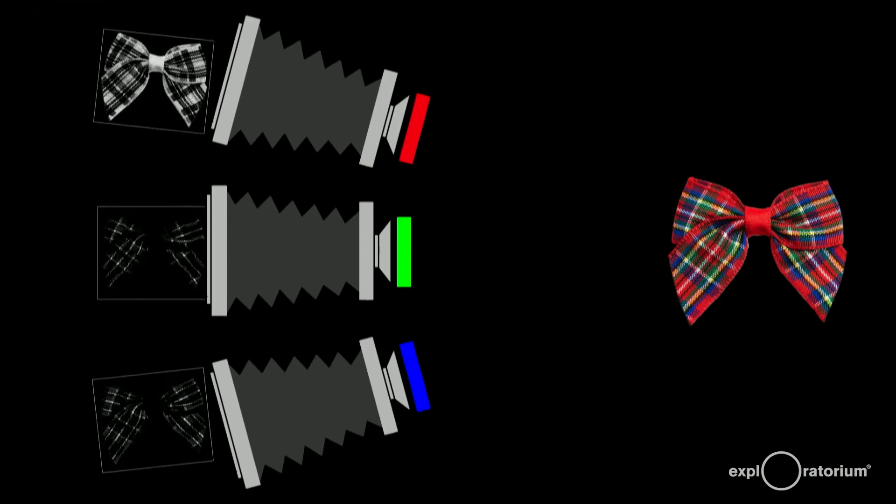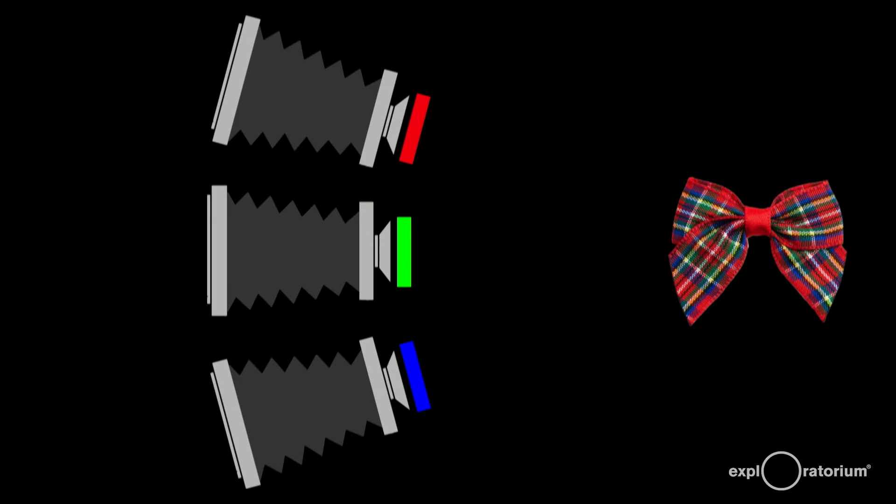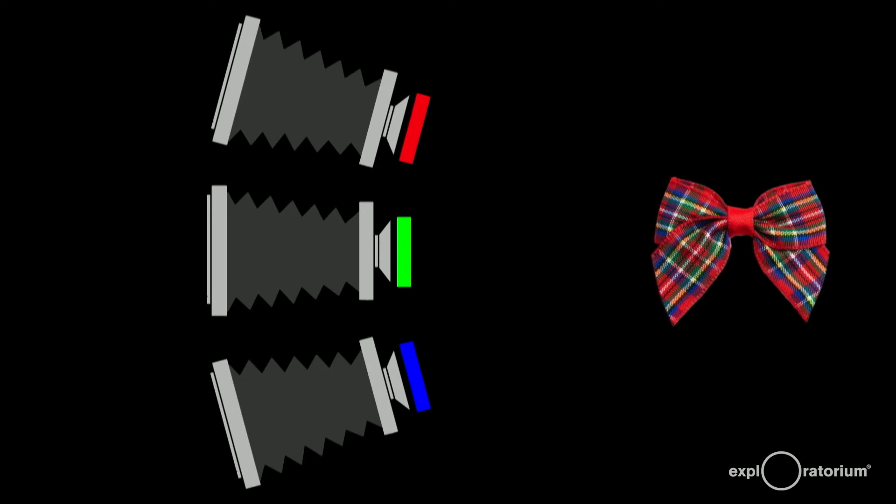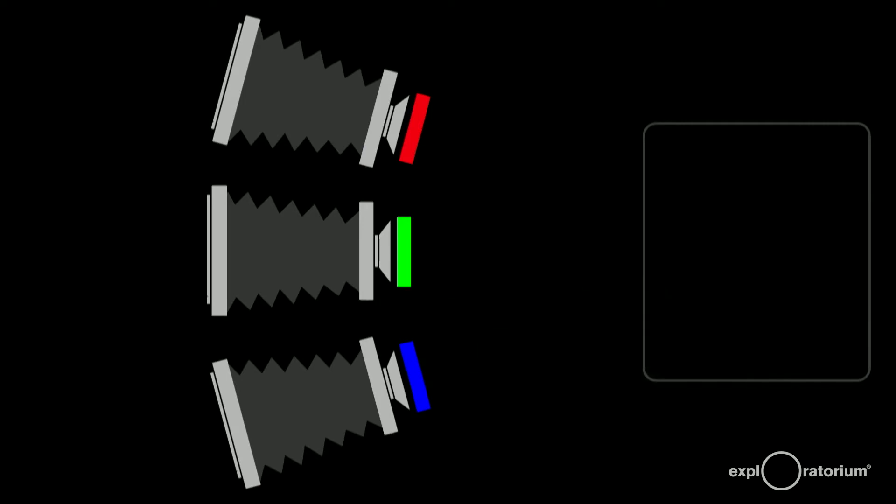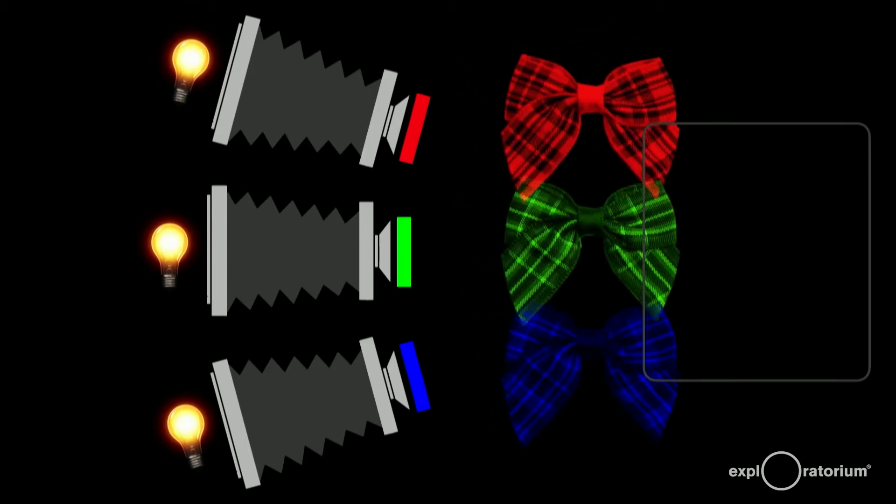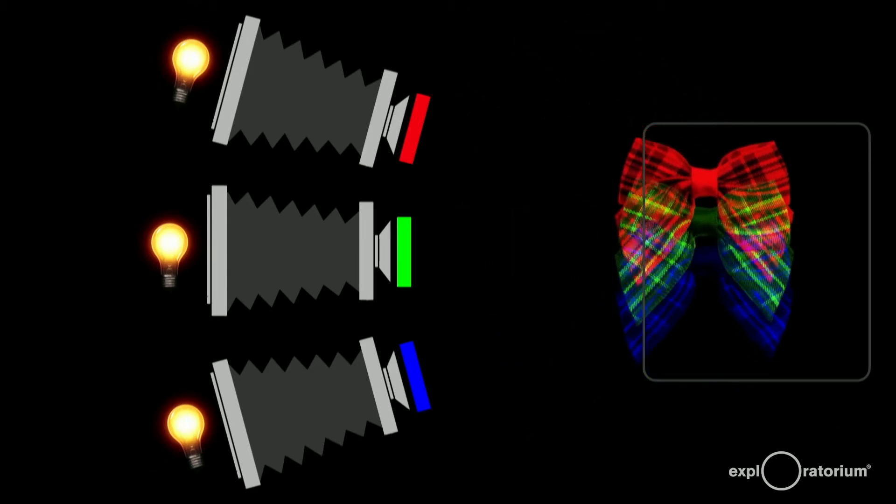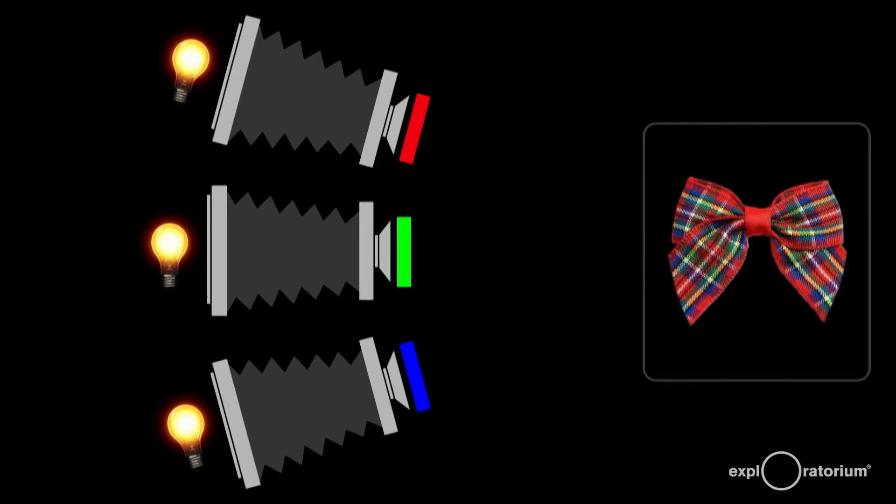He put these plates back into the cameras, got rid of the original ribbon, and replaced it with a screen, and placed three light sources behind the photo plates making the cameras into slide projectors. With the filters still in place, he projected the red, green, and blue images of the ribbon back on the screen where the ribbon appeared in full color.